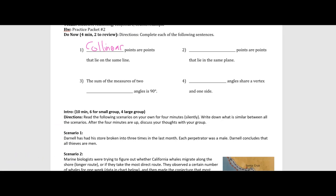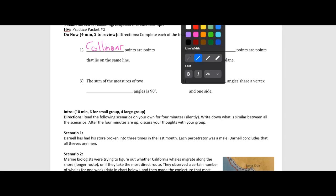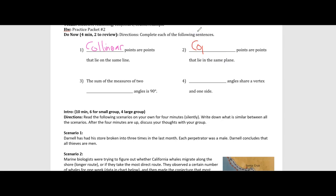Number two says blank points are points that lie in the same plane. So instead of linear, because we're not talking about a line, we're going to say coplanar. Coplanar, spelled with an A, not an E.